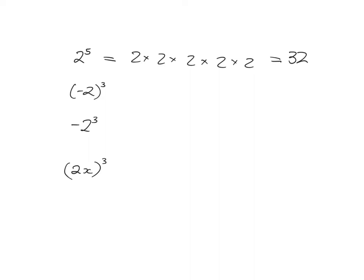What does this negative 2 to the power of 3 mean? It means this whole negative 2 has to be multiplied by itself 3 times. So the whole negative 2 gets multiplied by itself 3 times. So negative 2 times negative 2 is 4, and 4 times negative 2 is negative 8.